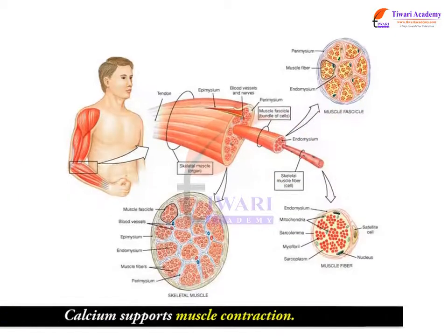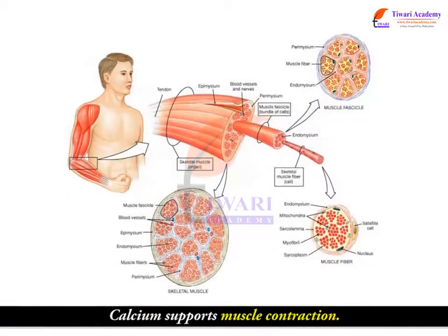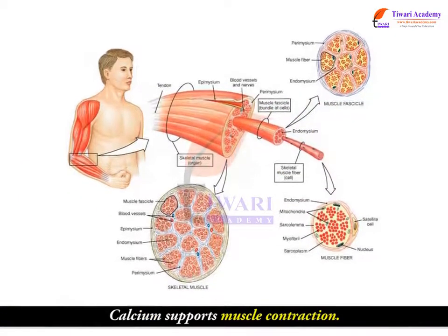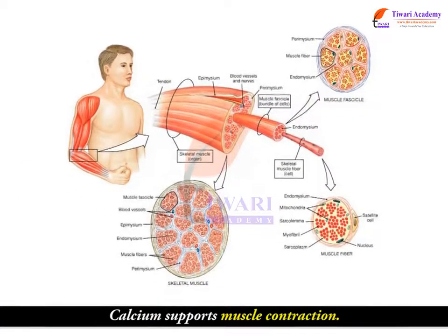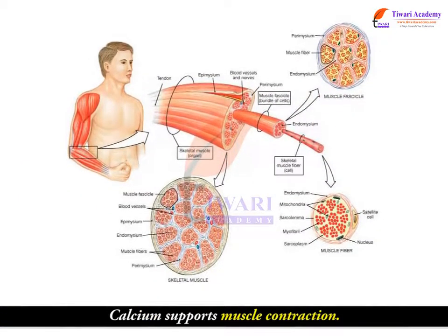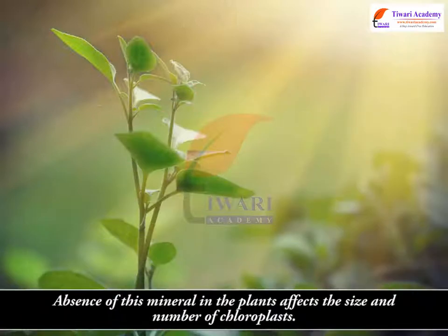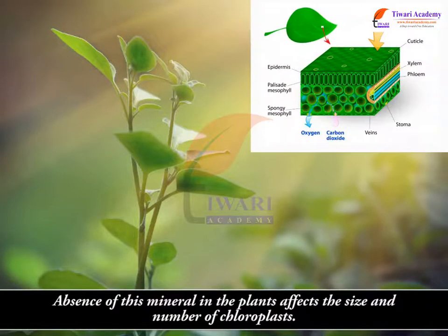Calcium supports muscle contraction. Absence of this mineral in plants affects the size and number of chloroplasts.